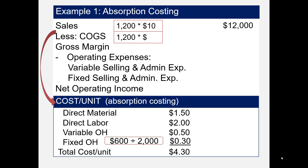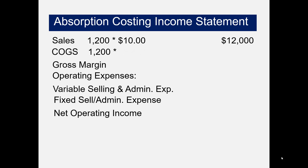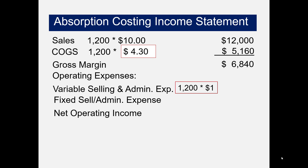Now we can use $4.30 to complete our income statement. Cost of goods sold computes to be $5,160. Gross margin is $6,840. Operating expenses include selling and administrative expenses: the variable part is $1 per unit sold, or $1,200 in total. Fixed selling and administrative costs were given to be $700 and are expensed in full in the period incurred. That gives us income of $4,940.